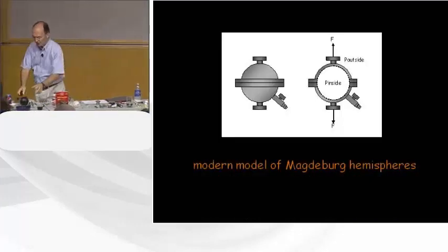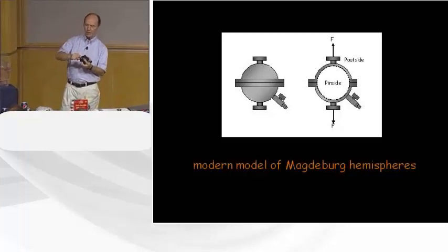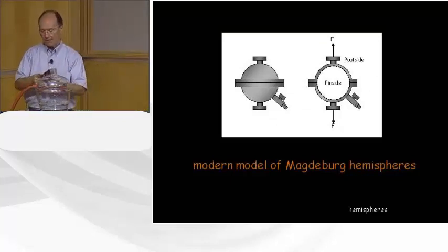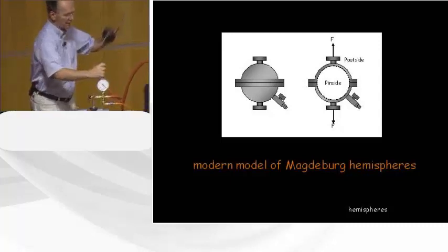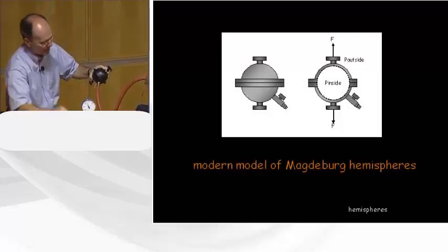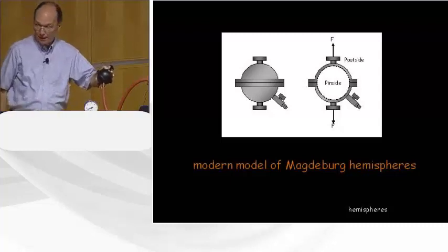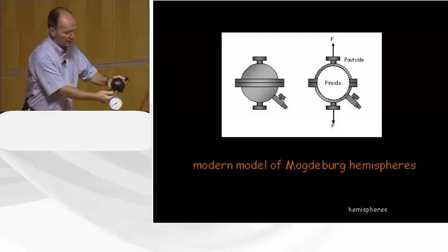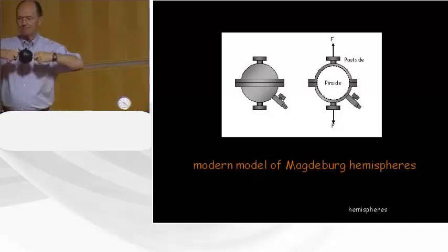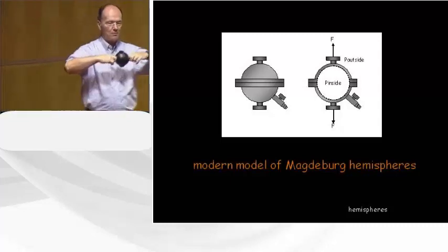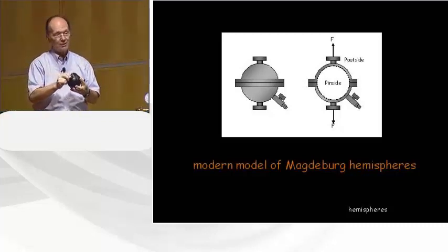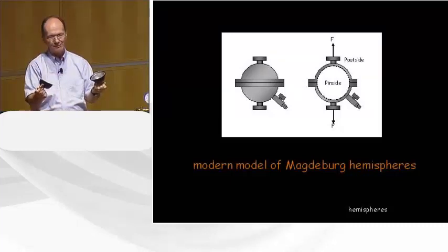We have a modern version of the Magdeburg hemispheres — two aluminum hemispheres with a rubber O-ring seal. If I evacuate the chamber by connecting the valve to the vacuum pump and let it pump down a little, I can close the valves and now they can't be pulled apart — a couple hundred pounds of force would be needed. But as soon as I let air into the chamber, no force at all is needed to separate them.